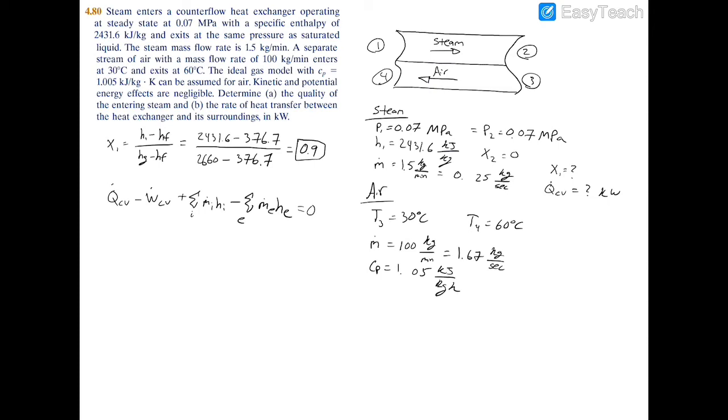Now since we don't have a turbine or a compressor receiving work here, we can say that the work for this control volume is equal to zero. So we're left with the heat transfer plus the inlets, so we have m1 and m3, so m1*h1 plus m3*h3.